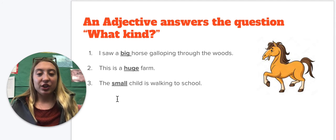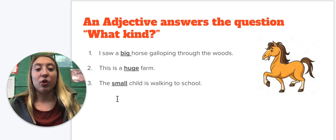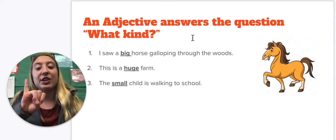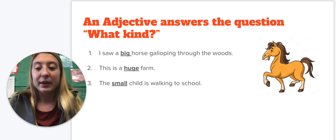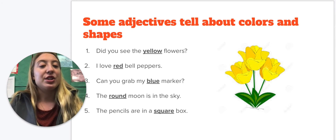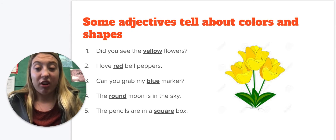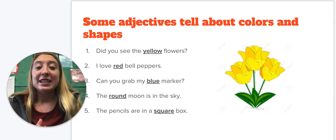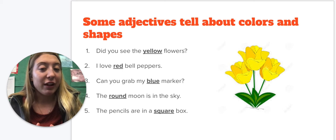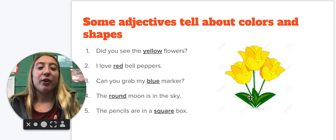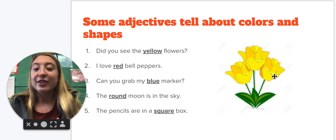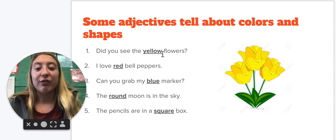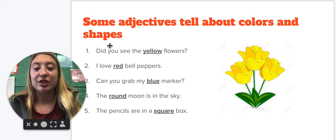So adjectives, you're going to ask multiple questions. So the first question we're going over is, for an adjective, what kind? But some adjectives tell about the color or the shape. So if I said, did you see the yellow flowers? You can write down, yes, I do see the what kind of flowers? The yellow flowers. You can also ask for what kind to go with colors and shapes.